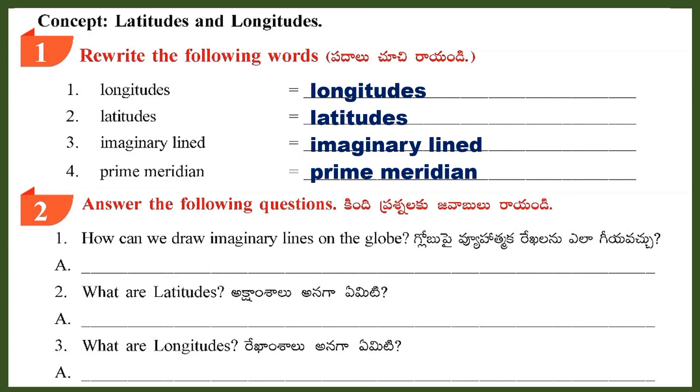Section 2: Answer the following. Question 1: How can we draw imaginary lines on the globe? Answer: Vertically and horizontally.